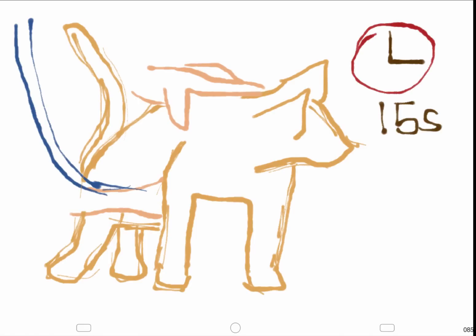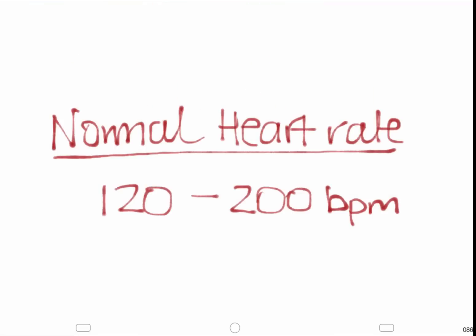Auscultation is different to the dog in that it is done in the sternal and parasternal areas of the cat. The heart should be auscultated simultaneously with palpation of the femoral pulse. The normal heart rate for a cat is 120 to 200 beats per minute. And here is an example of auscultation with simultaneous palpation of the femoral pulse.